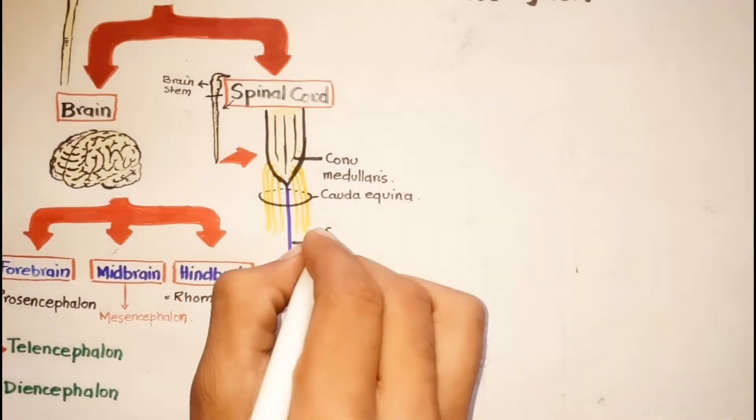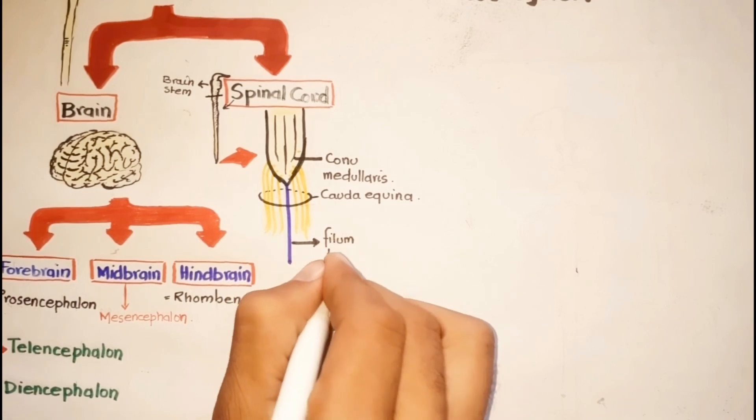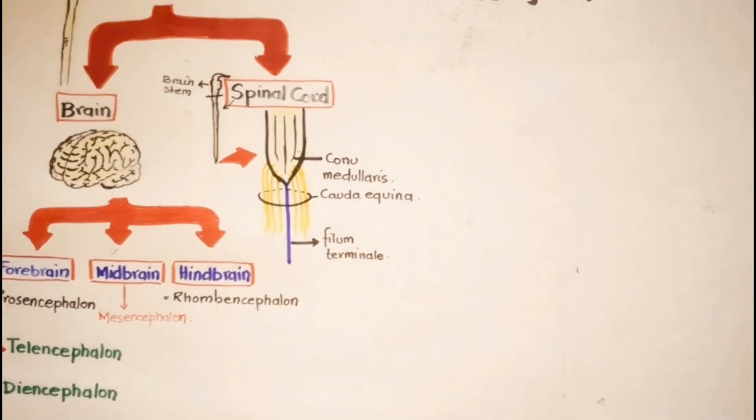The spinal cord is attached to the coccyx by an extension of the pia mater called the filum terminale.